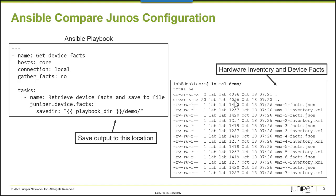Once I run the Ansible playbook, there are two files that are created for each host in the core Ansible inventory group. The files are automatically named using the host name of the device. There's a facts and an inventory file generated, and the facts output is stored in JSON format.